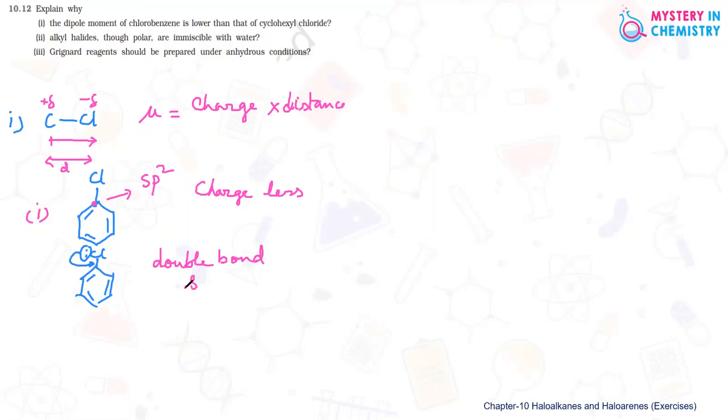Shorter as compared to single bond. So due to resonance it has double bond character in the carbon chlorine bond and it is shorter. When it is shorter, distance is also less. So charge is less, distance is less, therefore dipole moment will be less. So that is the reason that you have to explain clearly in the question.